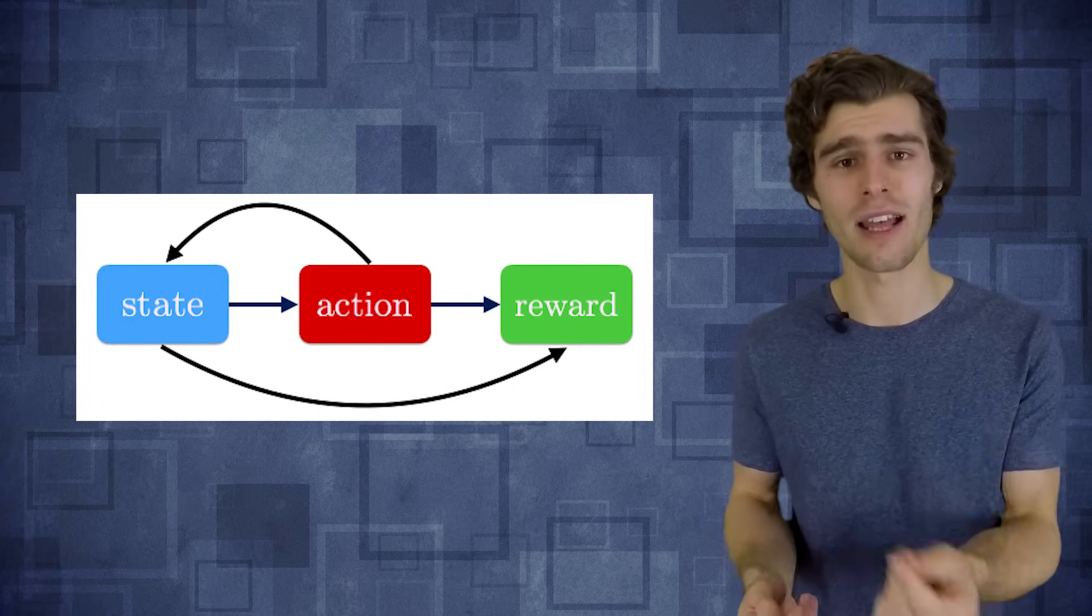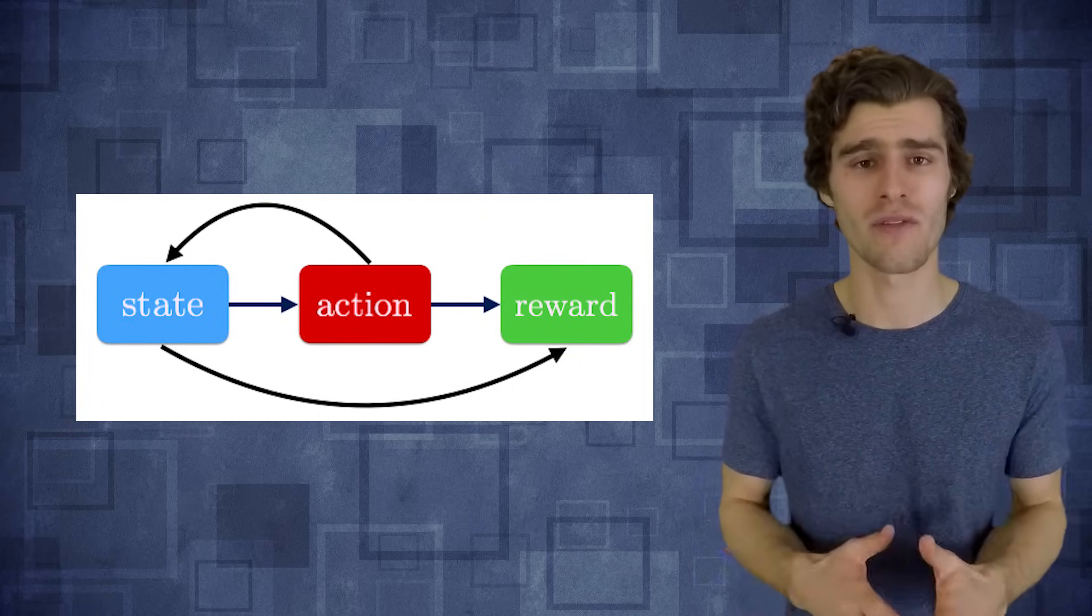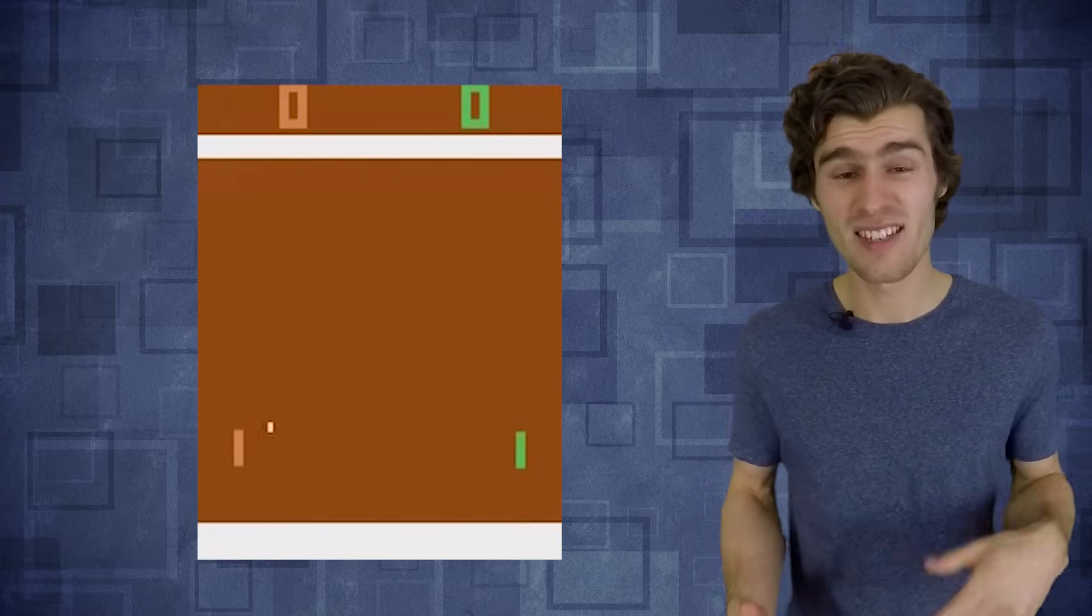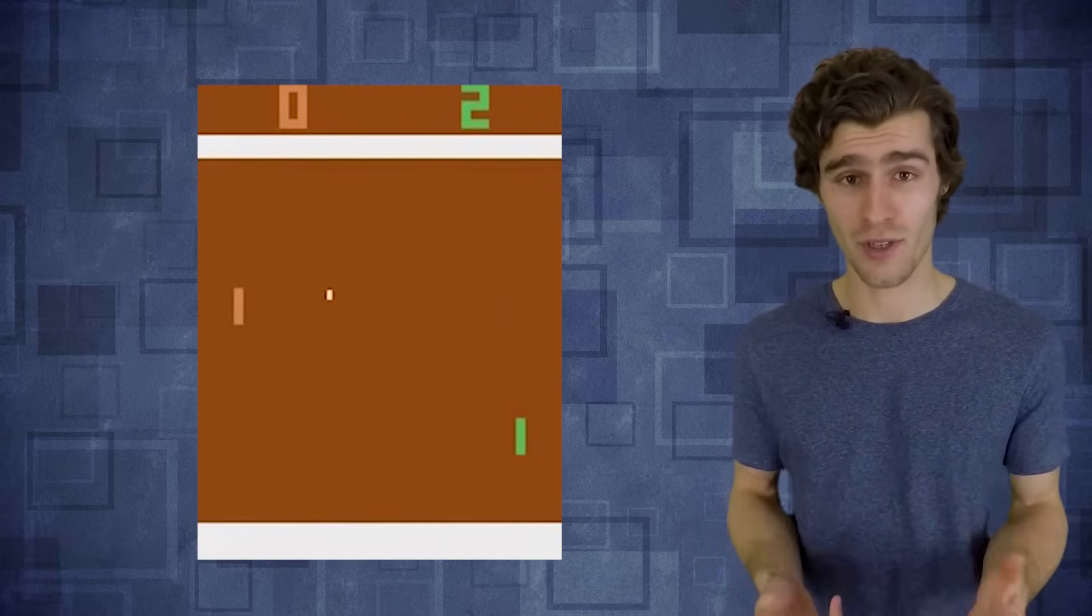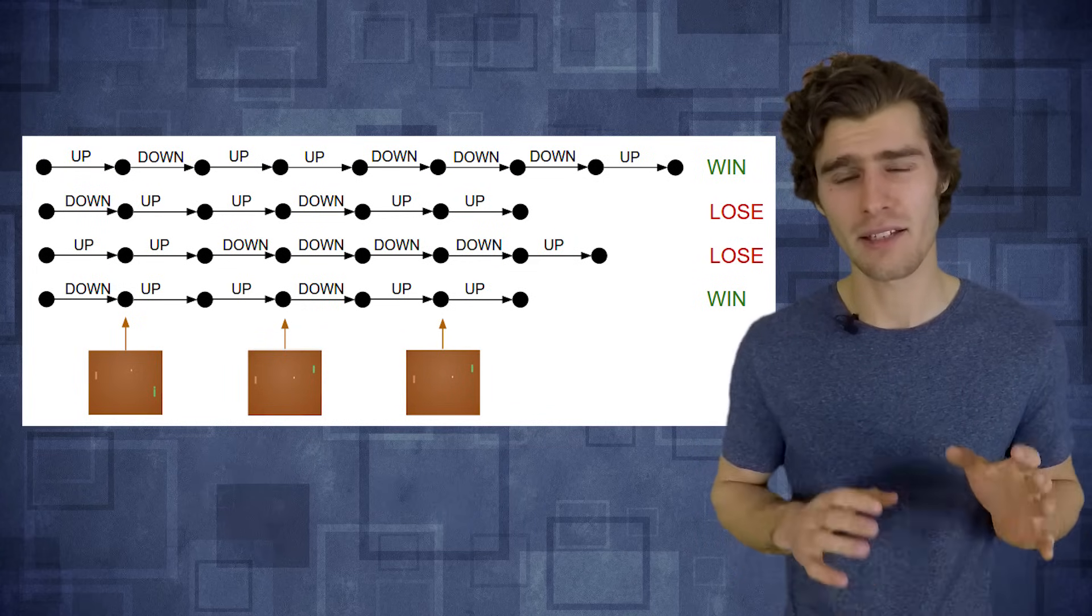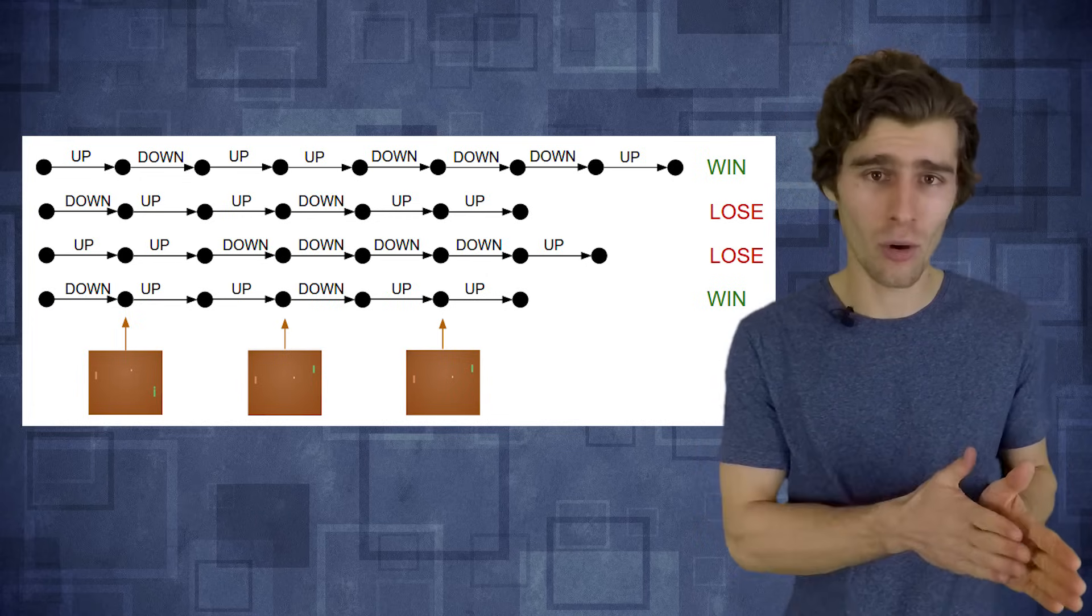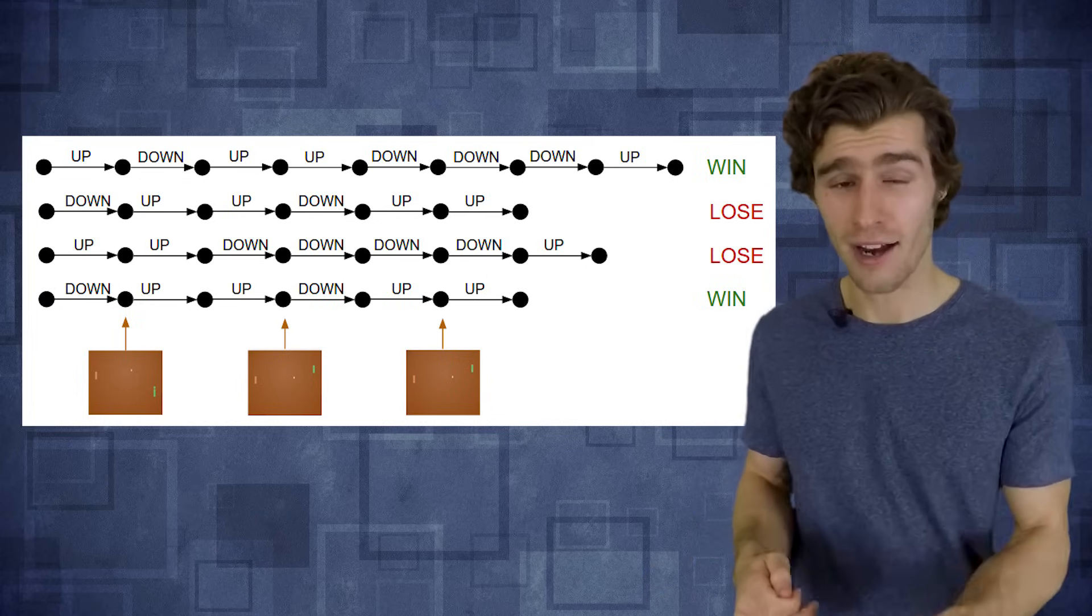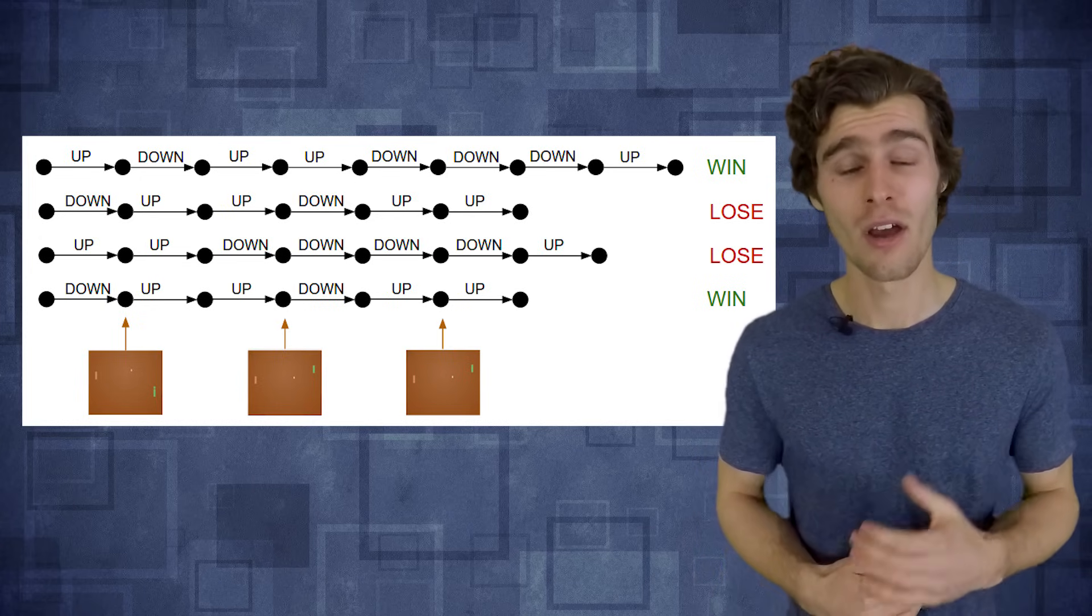So in order to train our policy network, the first thing we're going to do is collect a bunch of experience. So you're just going to run a whole bunch of those game frames through your network, select random actions, feed them back into the engine, and just create a whole bunch of random pong games. And now obviously, since our agent hasn't learned anything useful yet, it's going to lose most of those games. But the thing is that sometimes our agent might get lucky. Sometimes it's going to randomly select a whole sequence of actions that actually lead to scoring a goal. And in this case, our agent is going to receive a reward.